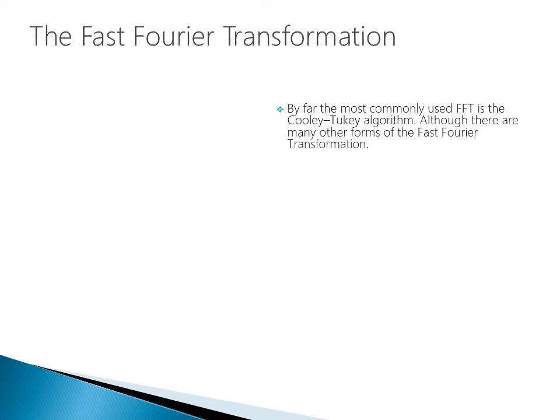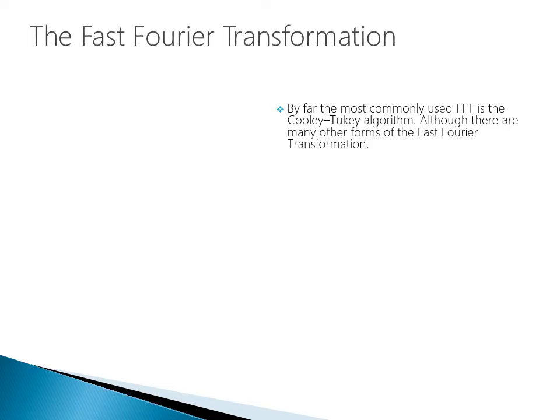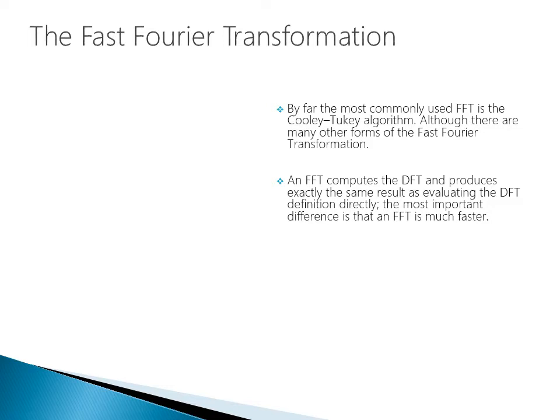Tukey's idea was given to Cooley for implementation while hiding the original purpose for security reasons. Since Cooley didn't work at IBM, patentability was doubted and the algorithm went to the public domain, which through the computing revolution of the next decade made FFTs one of the indispensable algorithms in digital signal processing. The most commonly used FFT is the Cooley-Tukey algorithm — a divide-and-conquer approach that recursively breaks down a DFT into smaller DFTs of sizes N1 and N2 with multiplications by complex roots of unity, traditionally called twiddle factors.